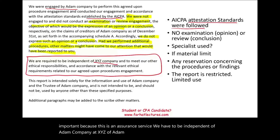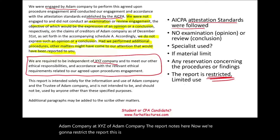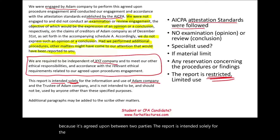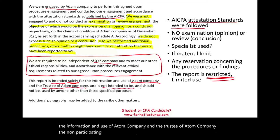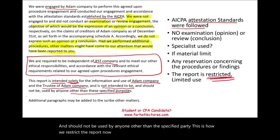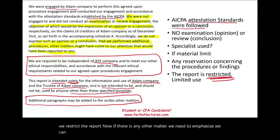Now we restrict the report — this is important. Agreed-upon procedures is restricted because it is agreed upon between specific parties. The report is intended solely for the information and use of Adam Company and the trustee of Adam Company, the non-participating party, and should not be used by anyone other than the specified parties. This is how we restrict the report. If there is any other matter to emphasize, we can add an additional paragraph, and we have a signature block.